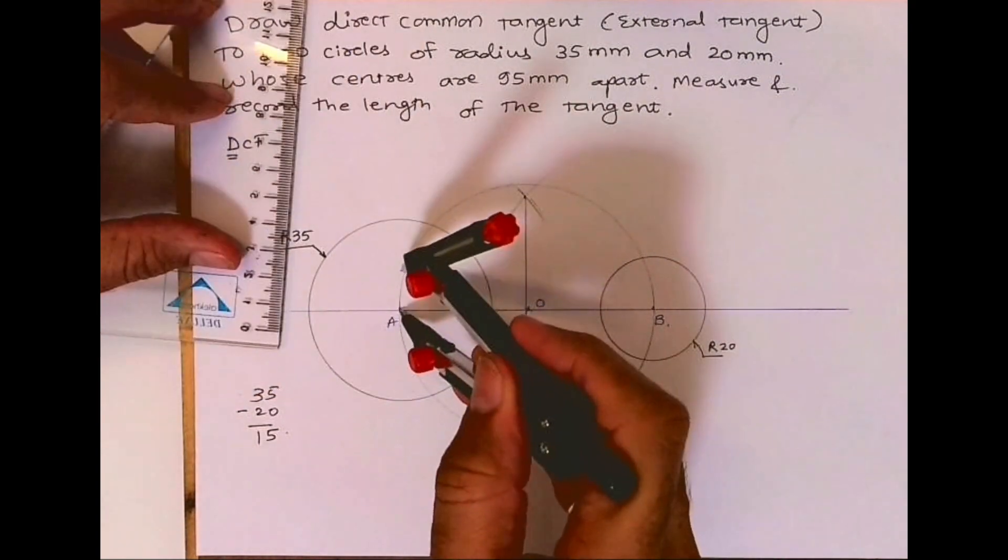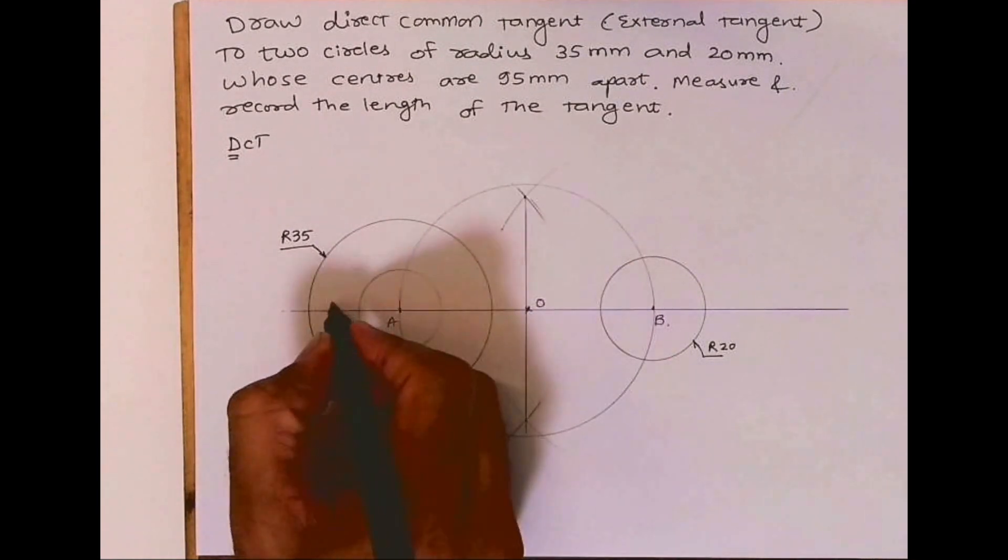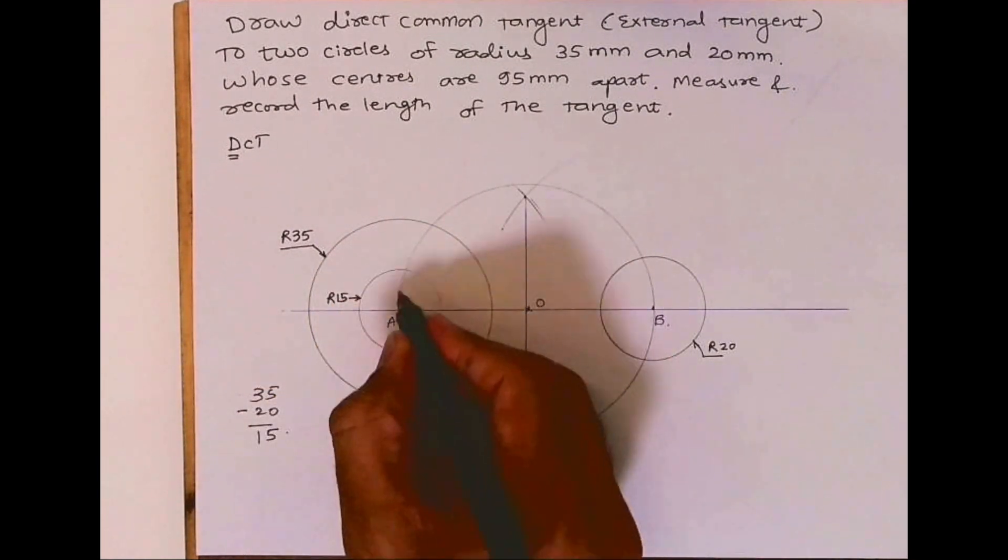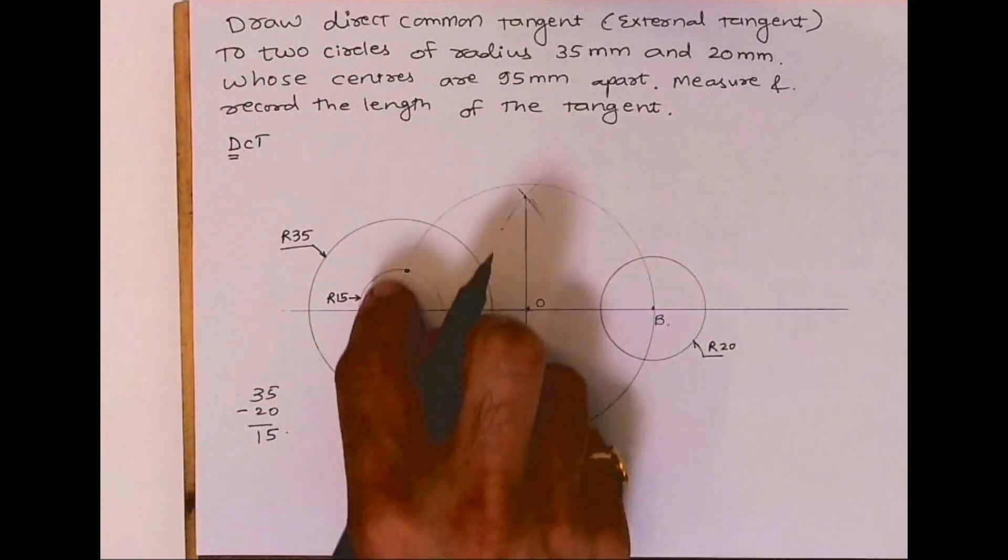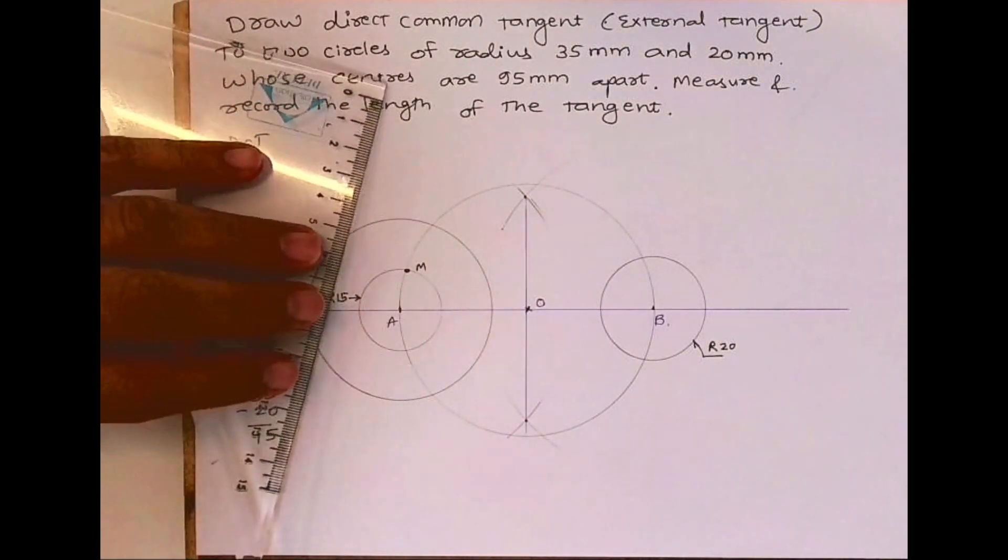Wherever it will cut with the mid circle, that is point M. Now I'll draw line AM.